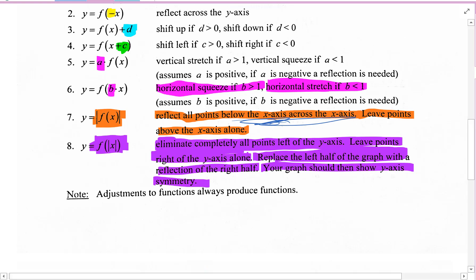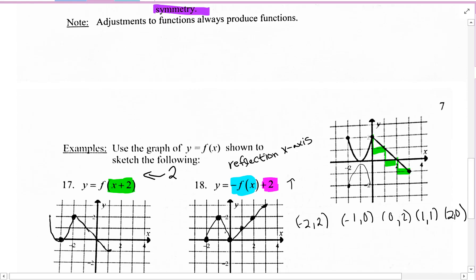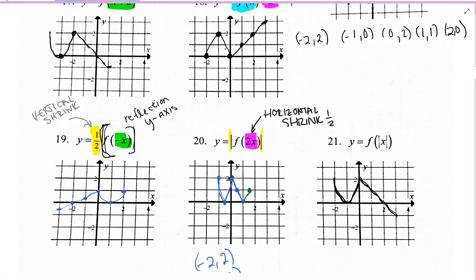F of absolute value of x. Eliminate completely all points left of the y-axis. So everything to the left is just going to be erased. And then you look at the points that are on the right side of the y-axis and you reflect those over. Those become the new points that are to the left of the y-axis. Let me sketch that original graph. Okay, for absolute value of the input, what we do is first erase all points to the left of the y-axis. Then, take all the points that are to the right of the y-axis and those become the new points to the left of the y-axis. So you reflect those. And you're done.